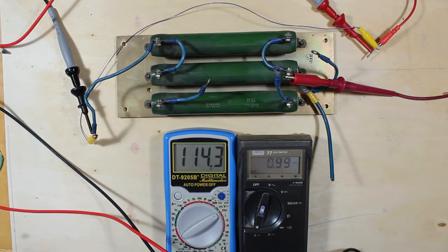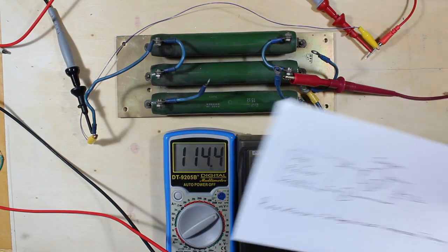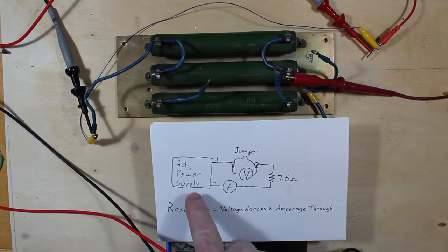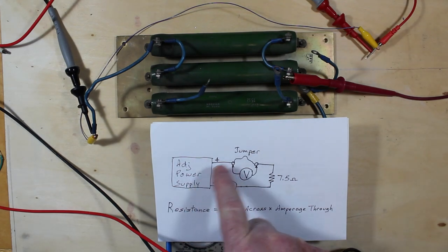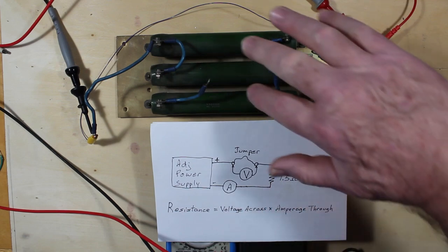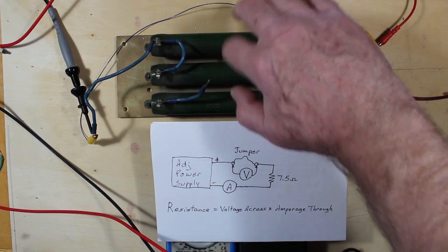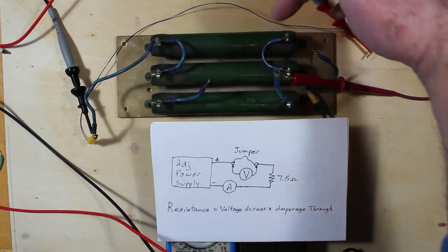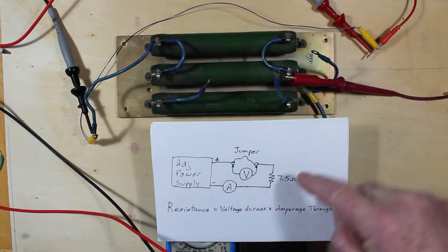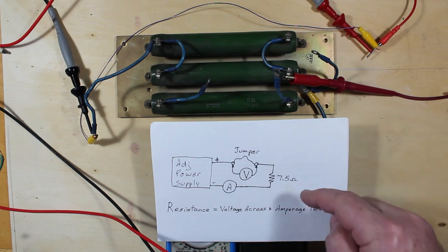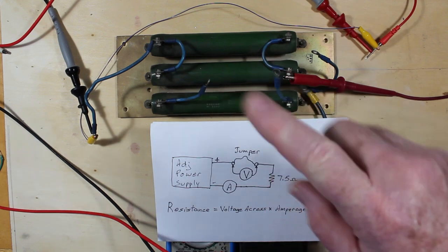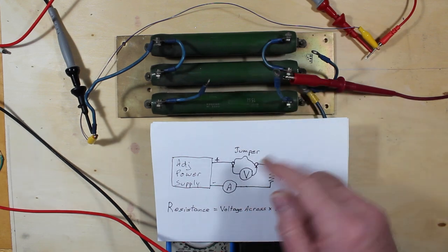Here's the actual circuit. We have an adjustable power supply and we're running some current through our jumper. These are the wires hooking everything else up. That is a seven and a half ohm load. These are two fifteen, well three fifteen ohm resistors, but we're using two of them to give us seven and a half ohms here.